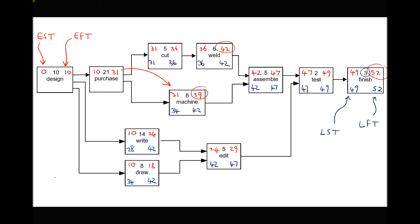When we get to the purchase task, we look for the latest it must be finished. Machining would allow purchase to finish on day 34, but cut requires it to be completed by day 31. Therefore the latest finish time for purchase must be day 31, otherwise the cut task can't take place on time. 31 minus 21 gives a latest start time of day 10. Applying the same logic to design: purchase needs to start by day 10, write by day 28, and draw by day 34. But in order for purchase to start on time, design must finish on day 10.